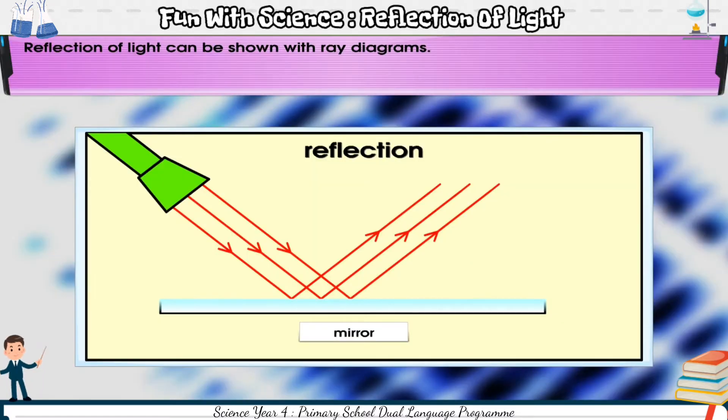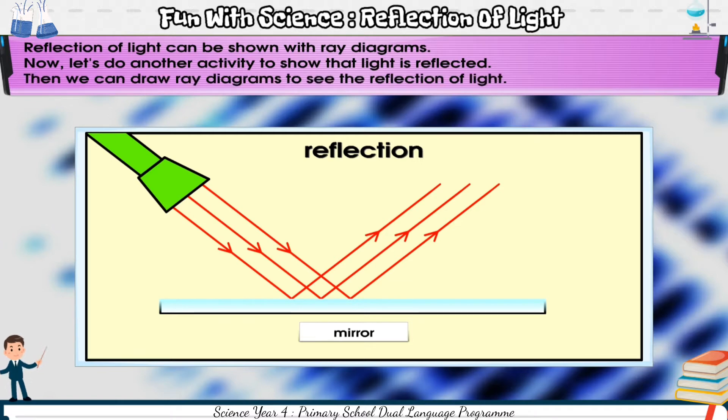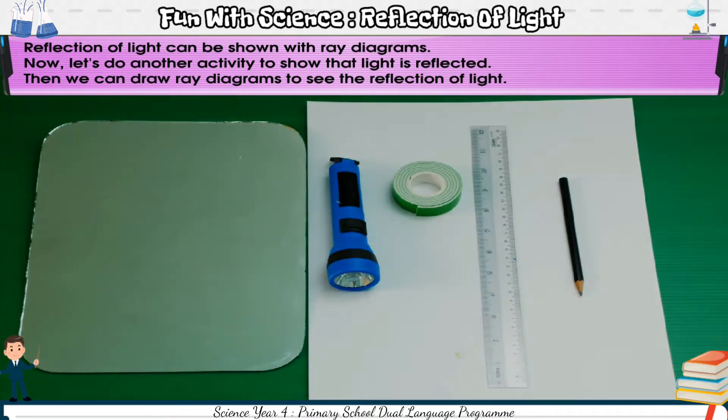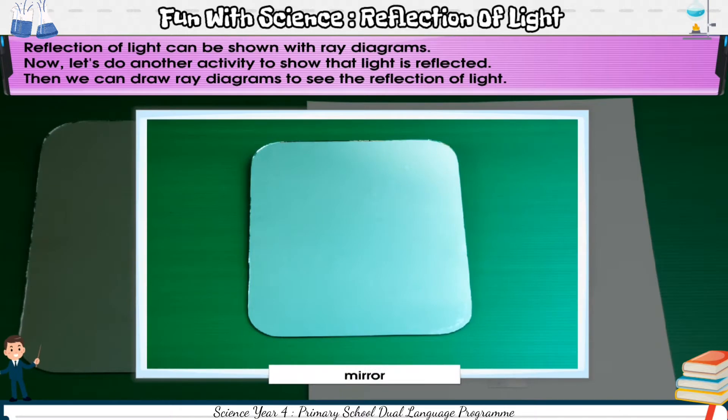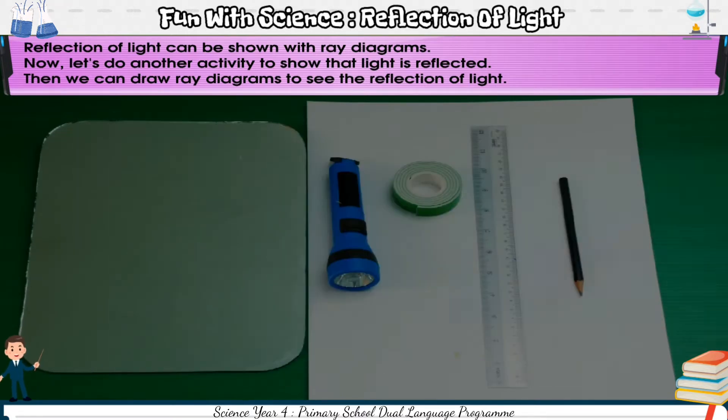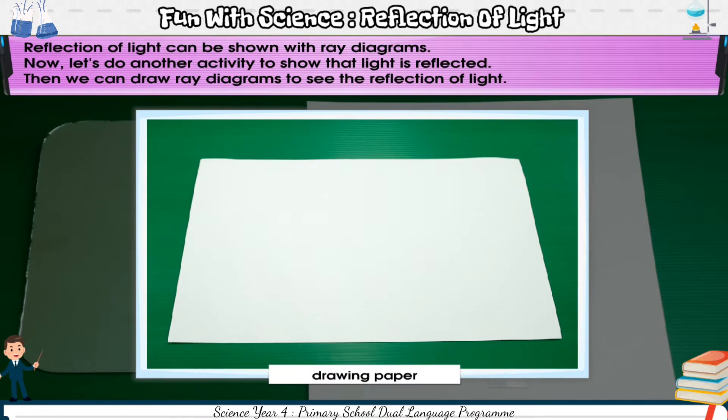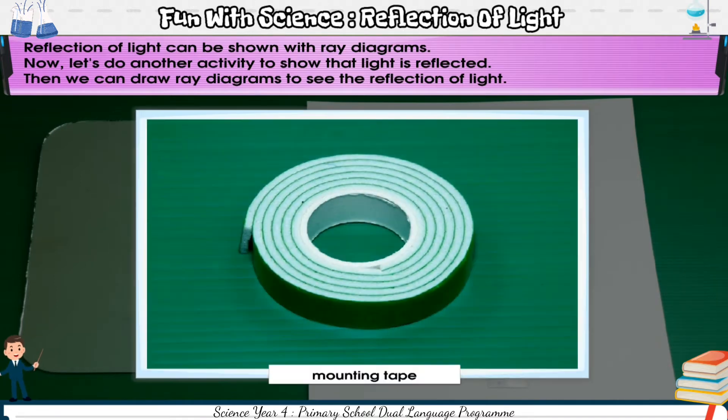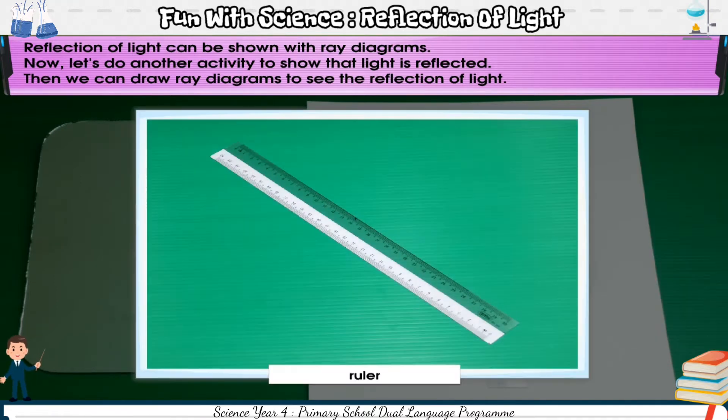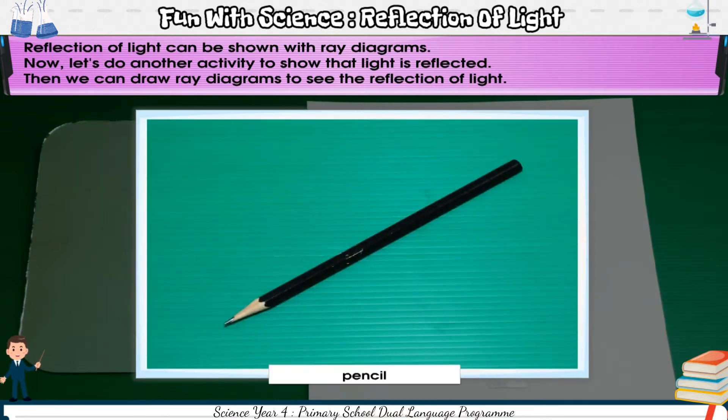Reflection of light can be shown with ray diagrams. Now, let's do another activity to show that light is reflected. Then, we can draw ray diagrams to see the reflection of light. First, you will need a mirror, a torch, a piece of drawing paper, some mounting tape, a ruler, and a pencil.